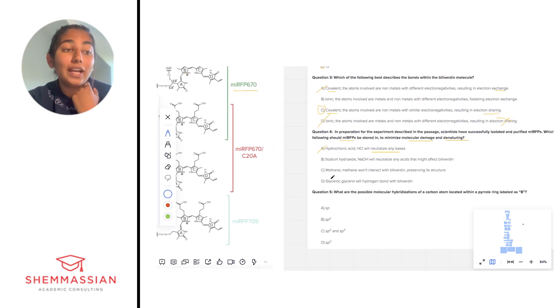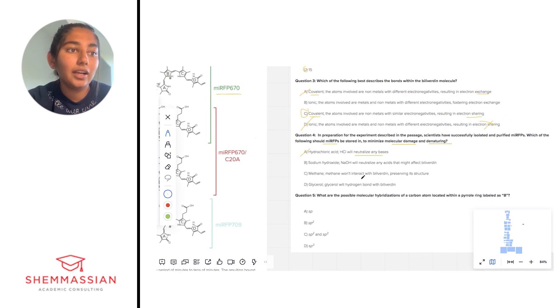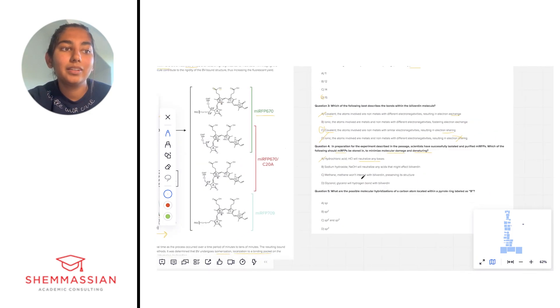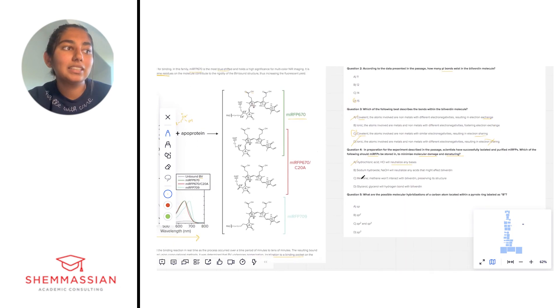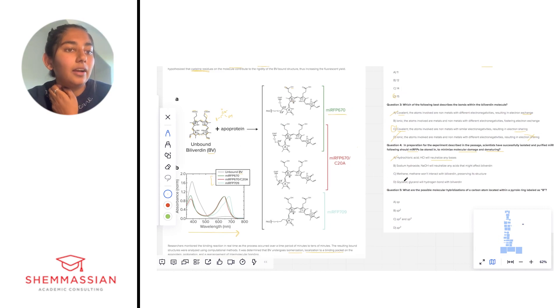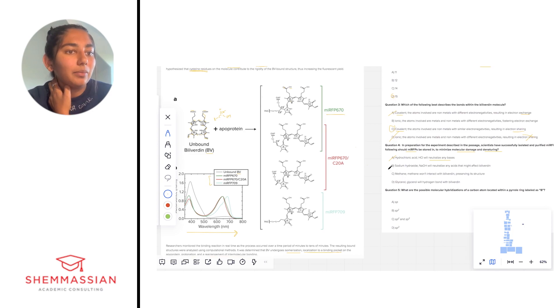Along the same vein, we have sodium hydroxide, which might neutralize any acids that might affect BV. It's true, NaOH does neutralize acids. However, it's an incredibly strong base, very, very charged, and that might mess up some of these groups here like the carboxylic acid and that kind of thing. So I'm going to eliminate answer choice B because that's a really powerful base.